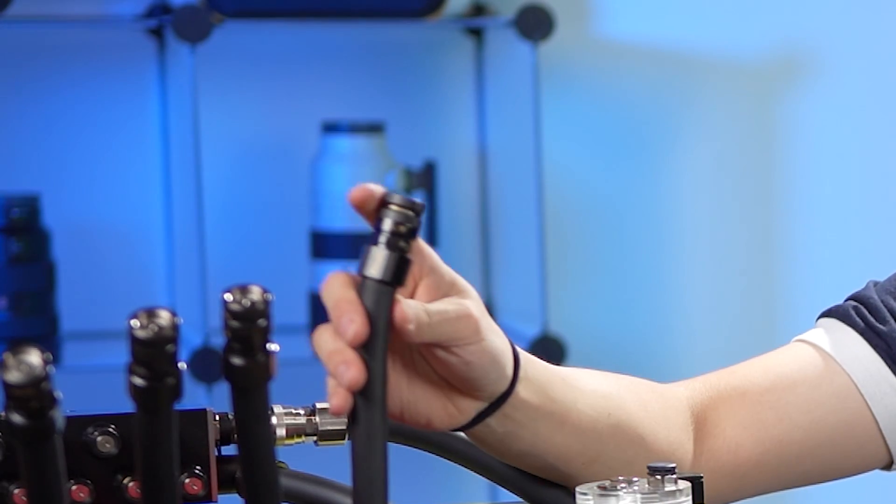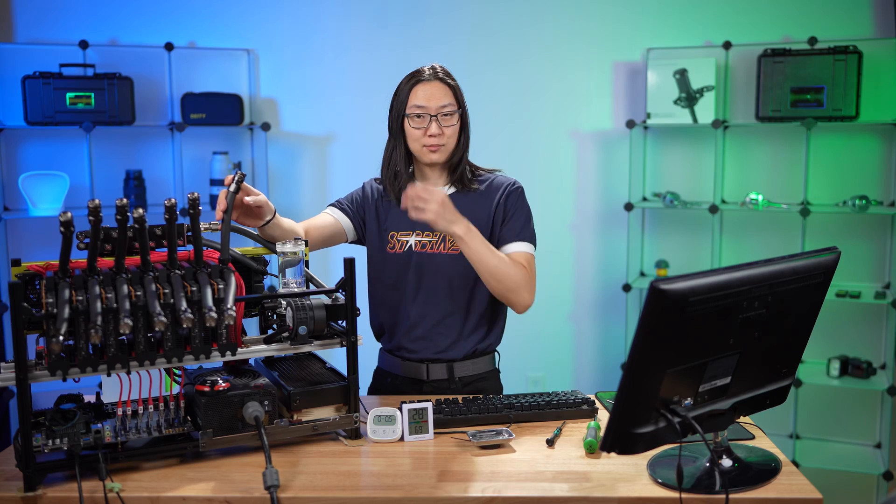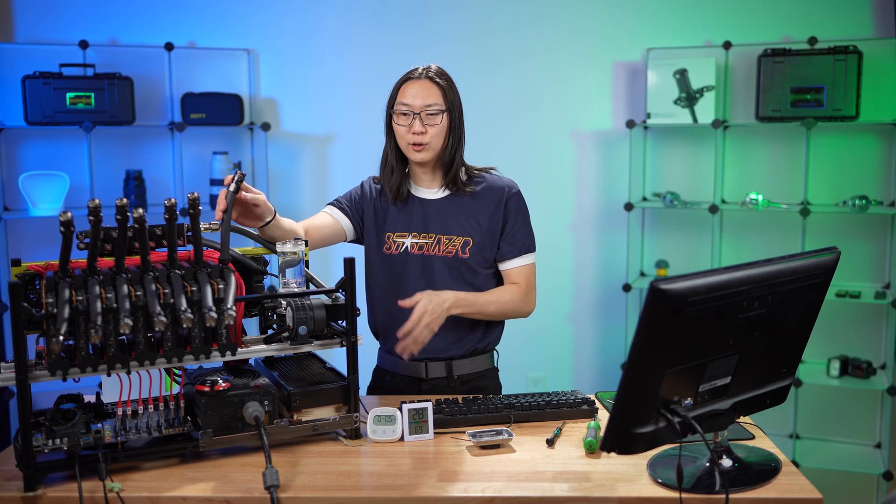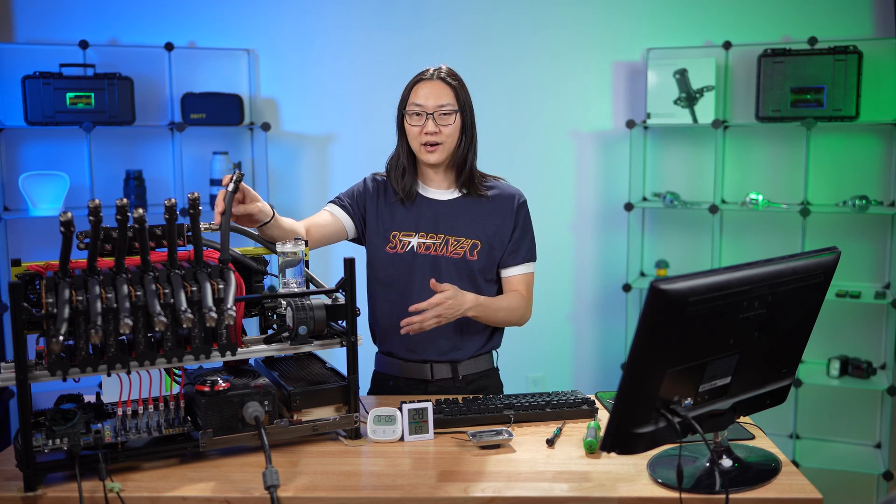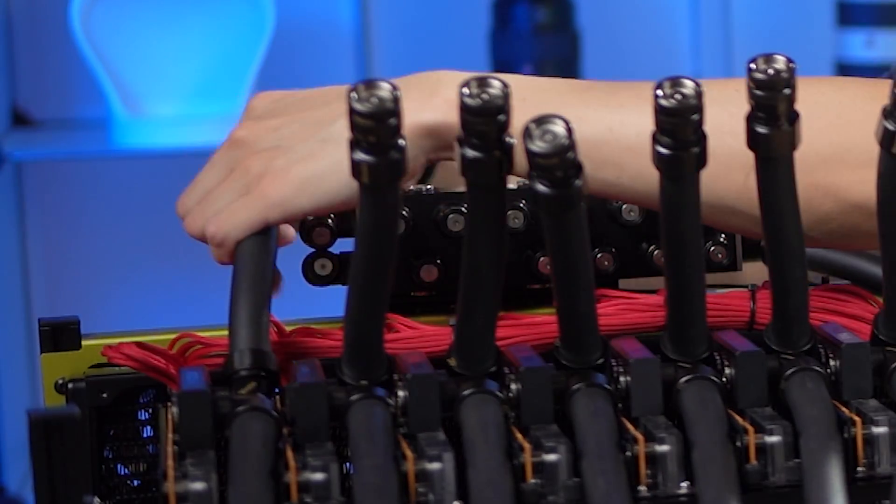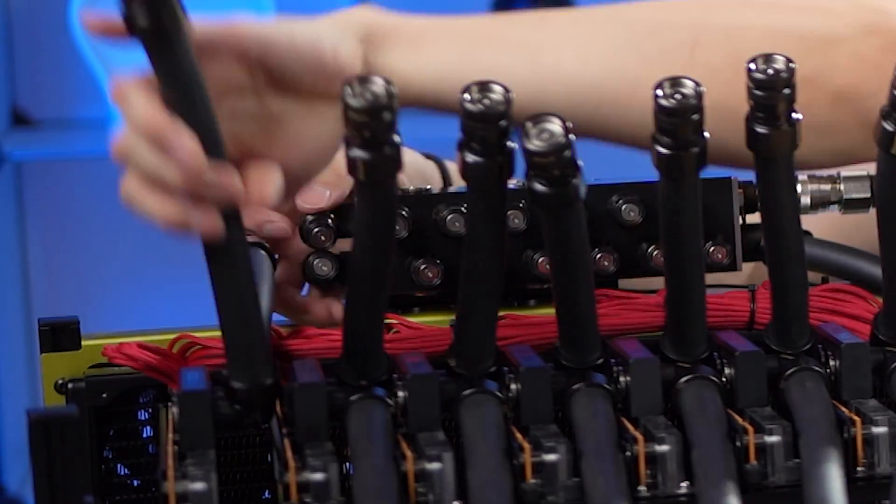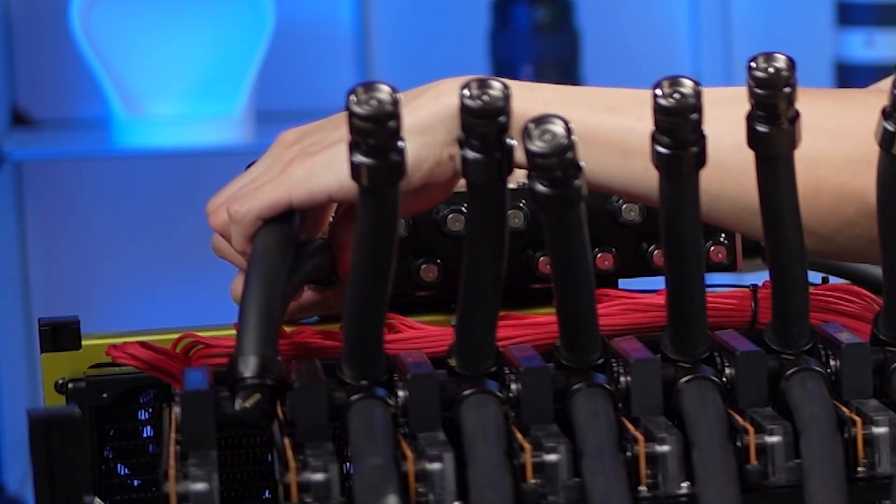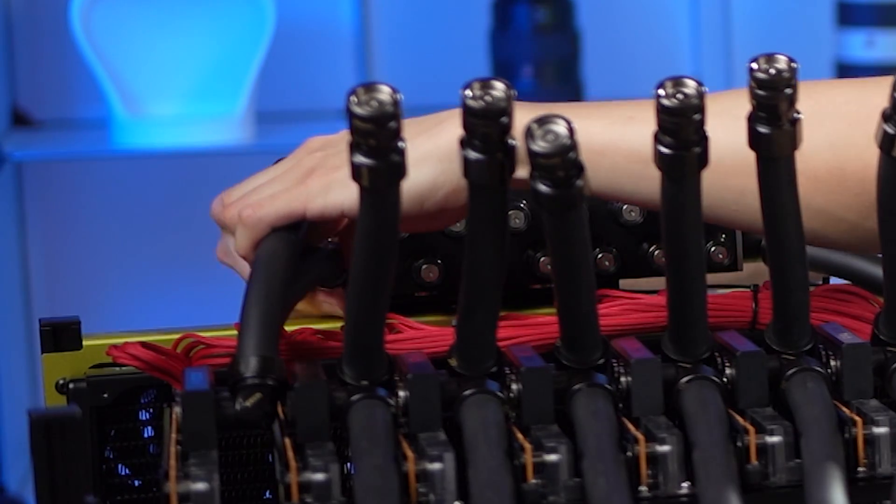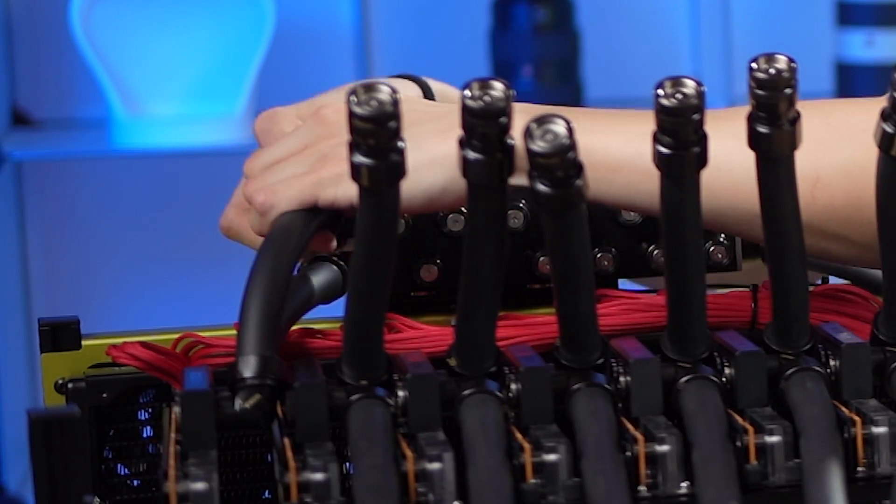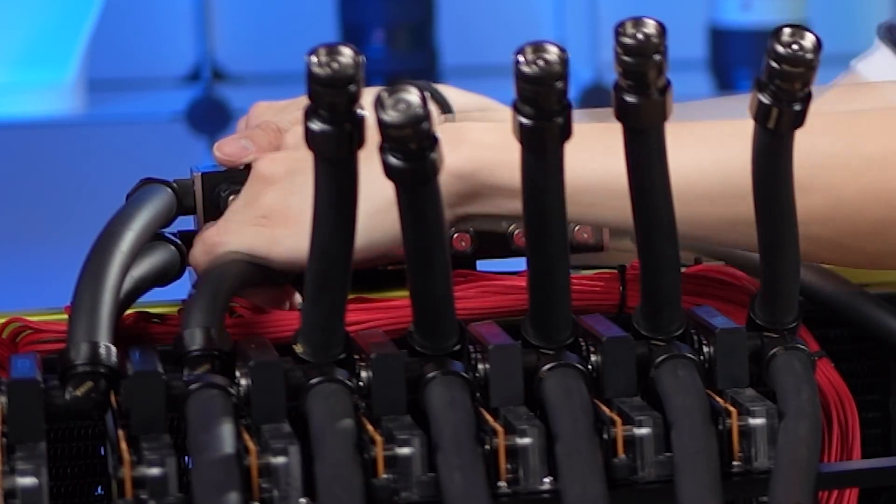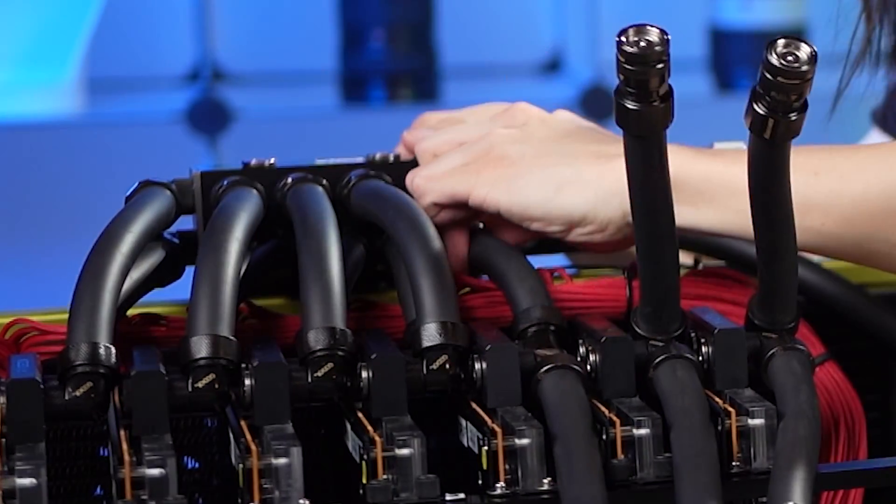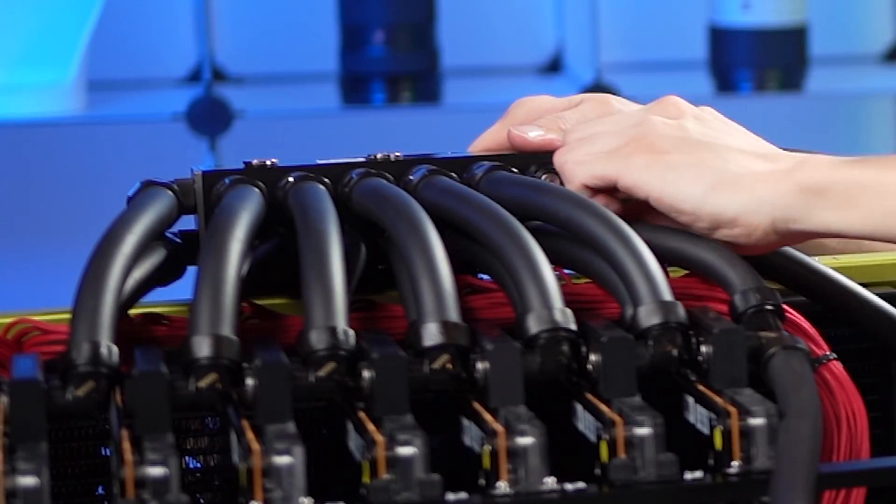These are Coolant's quick disconnect fittings, and this allows it to keep the system operating. You don't have to drain the entire loop if you have a problem with the card. You can literally just take that card out, turn the system back on, and let it continue to run.